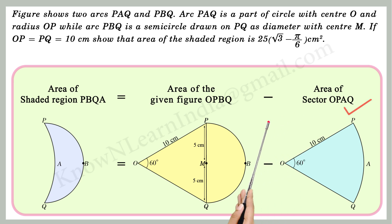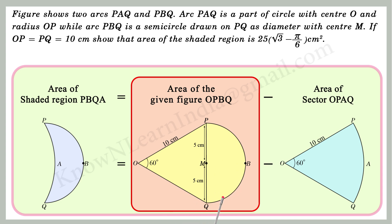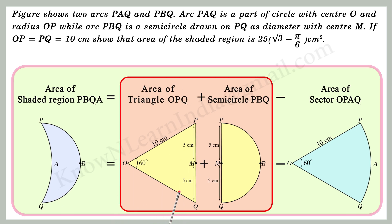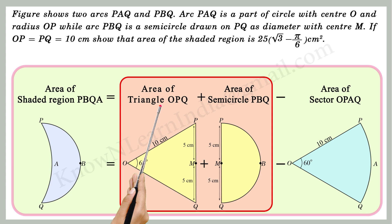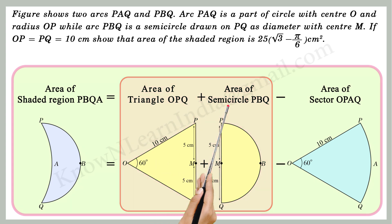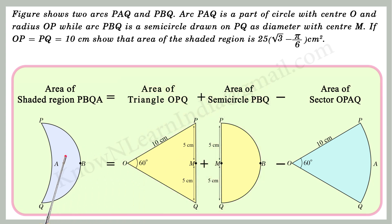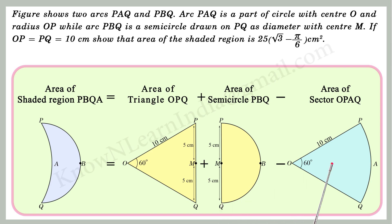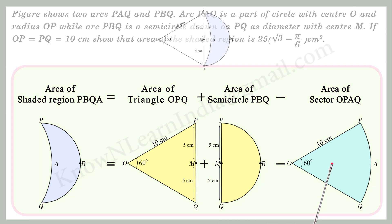But we cannot find the area of the figure Opbq in one step. So we divide it into two parts: triangle Opq and semi-circle Pbq, and then we can easily find their areas. So, the area of the shaded region Pbqa is equal to the area of triangle Opq plus the area of semi-circle Pbq minus the area of sector Opaq.